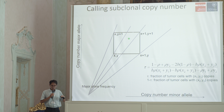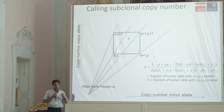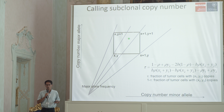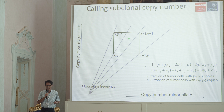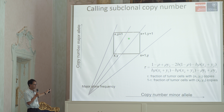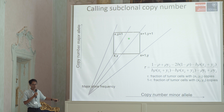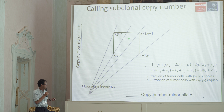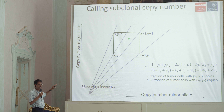Once we've identified very small copy number changes, we want to say whether these changes are clonal or subclonal, and if subclonal, what proportion of cells are affected. One way to think about this is that we have two alleles — the major copy number on the x-axis and the minor copy number — and each copy number segment lies somewhere in this space. We can estimate the major and minor copy number.